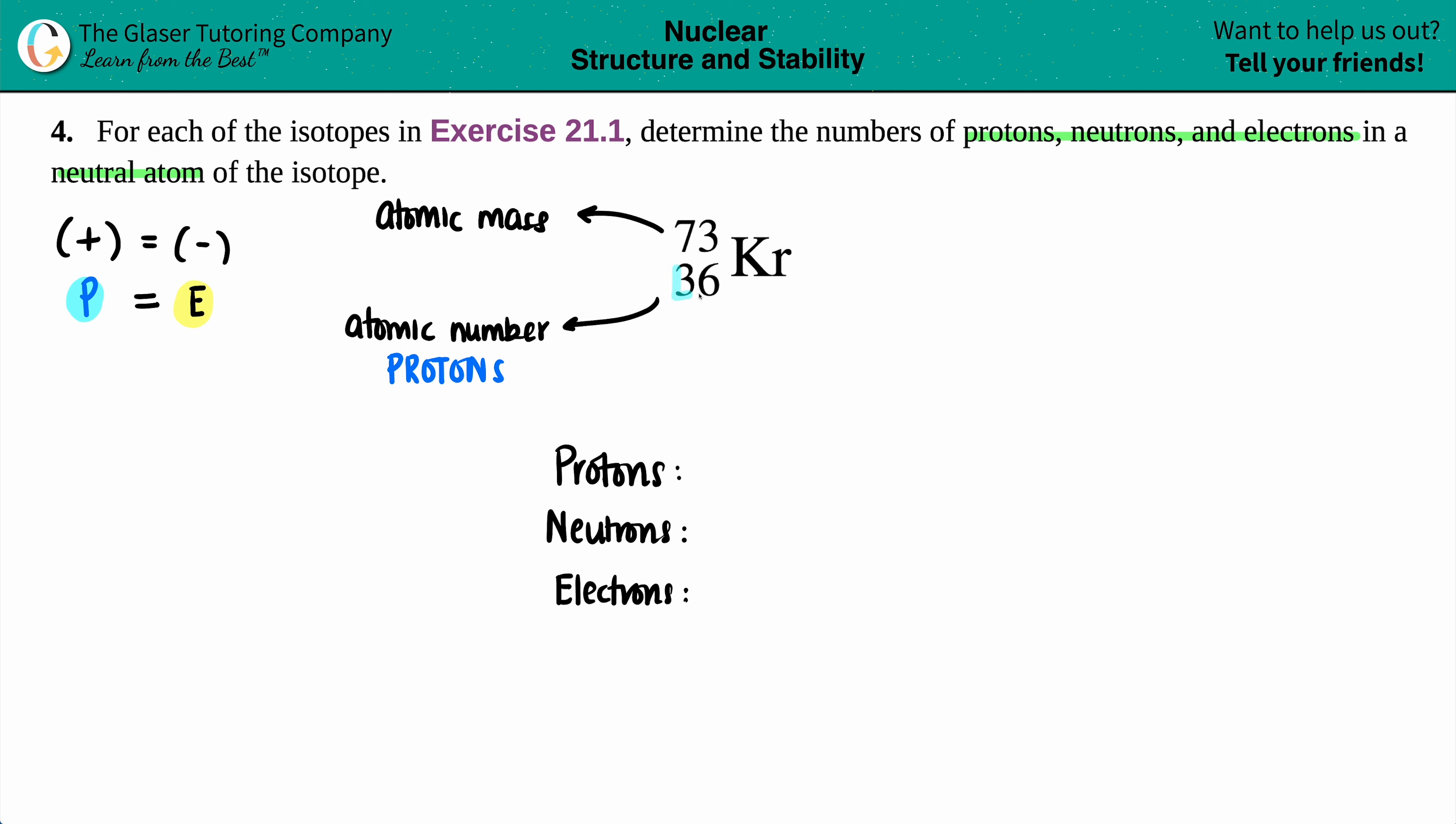So there you go, 36 atomic number. Every element has a different atomic number, it's all unique. So for krypton, which is Kr, it has an atomic number of 36, which means that it has 36 protons. And since it said that we have a neutral atom, 36 protons—36 positives—has to equal out the 36 negatives that are outside of the nucleus.